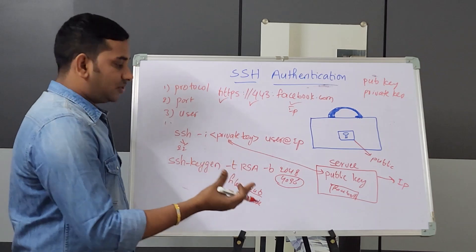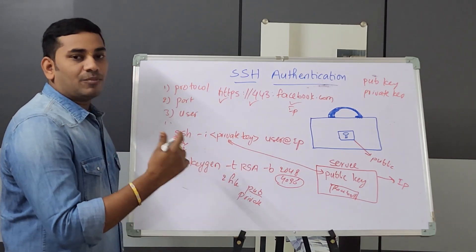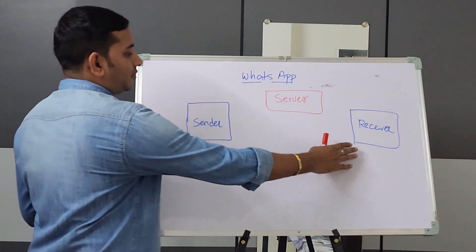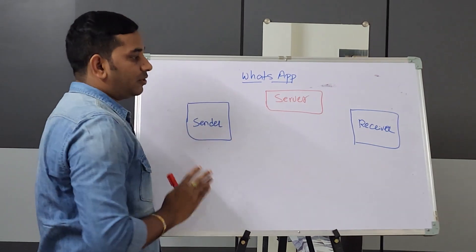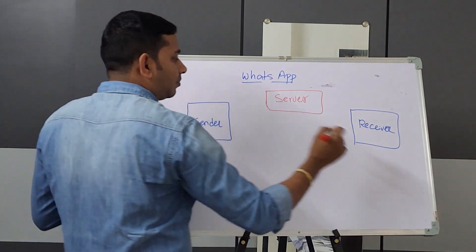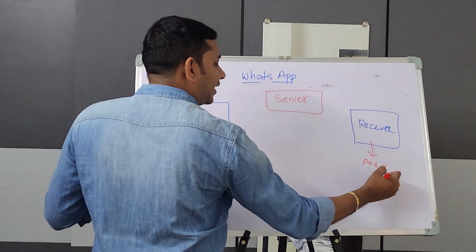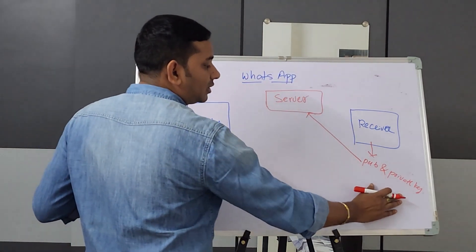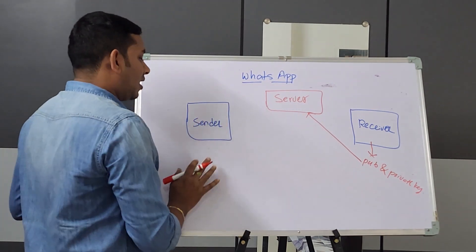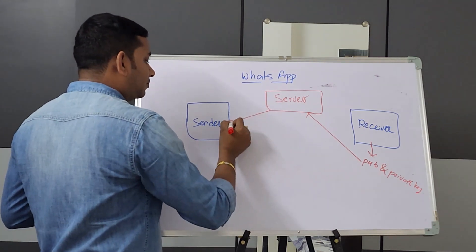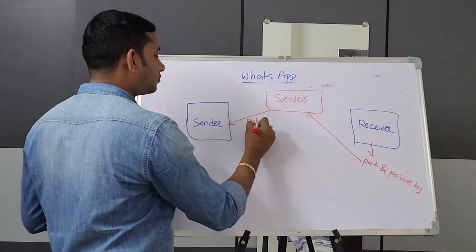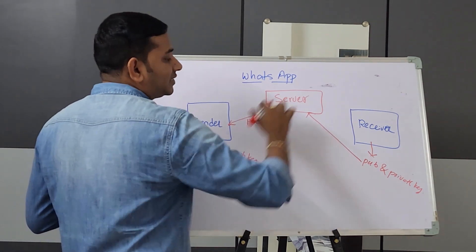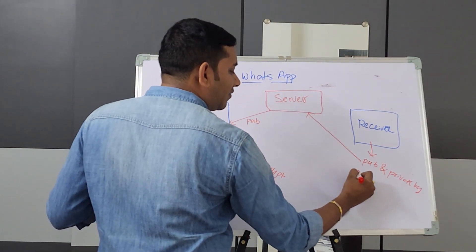Now for the WhatsApp example — sender and receiver. When you first start WhatsApp on your phone, your phone generates a public key and private key. The public key is sent to the WhatsApp servers. The private key stays on your phone. When a sender sends a message to a receiver, the server uses the receiver's public key to encrypt the message.